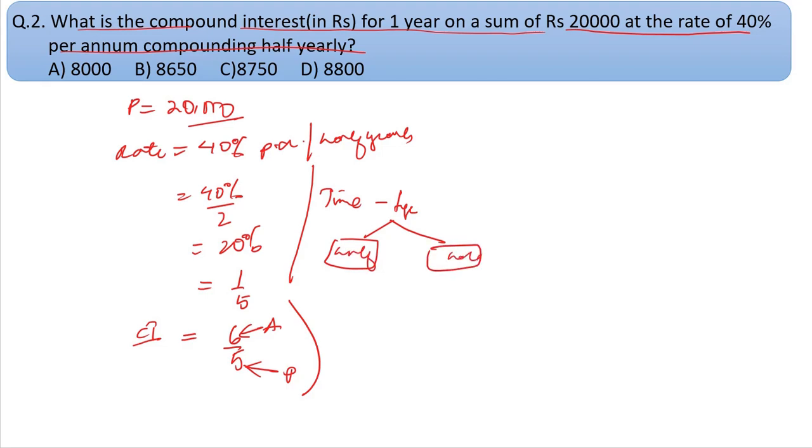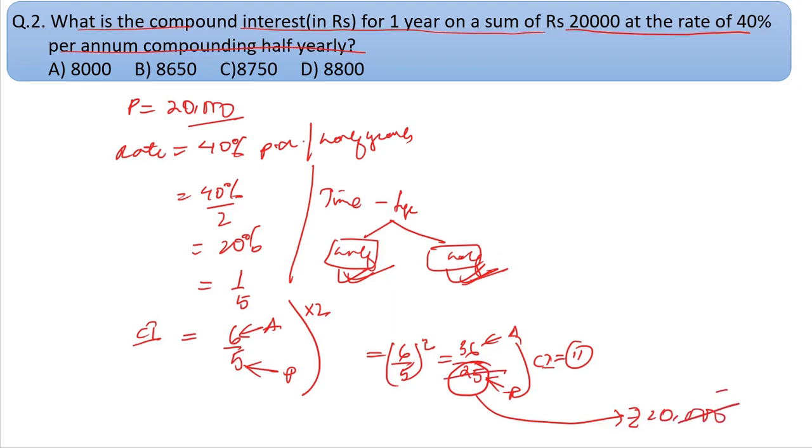For half-yearly compounding, one year means two compounding periods. The formula becomes 6/5 whole square. Six squared is 36, five squared is 25. The difference is 36 minus 25 equals 11. If 25 units equal Rs. 20,000, then one unit is 20,000/25 = 800. Therefore 11 units equal 11 × 800 = 8800. The answer is option D, 8800.